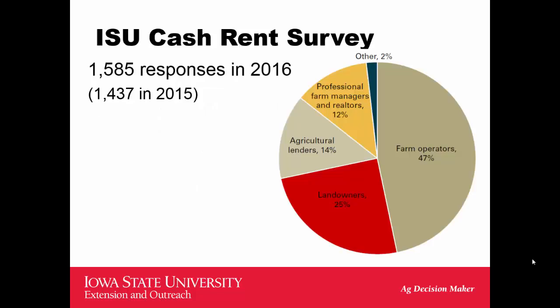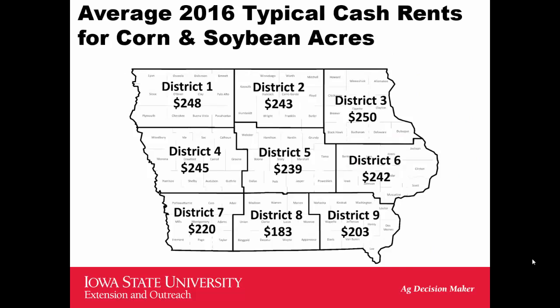This last year statewide we had over 1,500 responses — predominantly from farm operators, although about a fourth from professional farm managers and lenders, and another fourth from landowners. We break the report down into the nine crop reporting districts. I work mostly in District 2 and District 5. All through the northern six districts, rents really don't vary all that much on a district-wide basis, though there's a significant difference between high, medium, and low quality land.